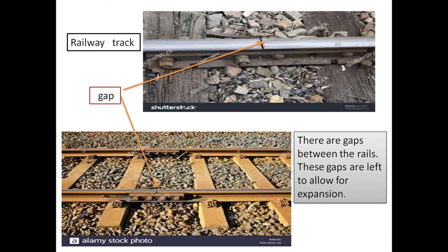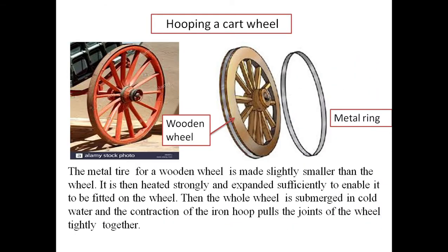Other instances where we can see expansion: railway tracks have gaps left between the rails. These gaps are left to allow for expansion — otherwise, derailing of the train will occur if the gaps are not present.